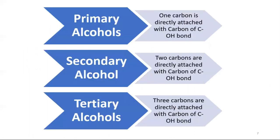Primary alcohol: one carbon is directly attached with carbon of C-OH bond. Secondary: two carbons are directly attached with carbon of C-OH. In the tertiary, three carbons are directly attached with carbon of C-OH.